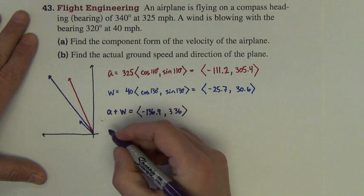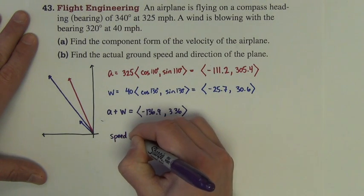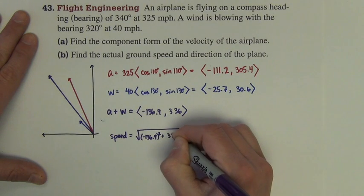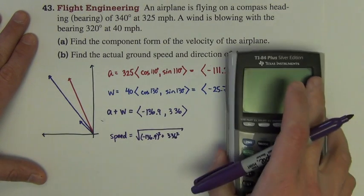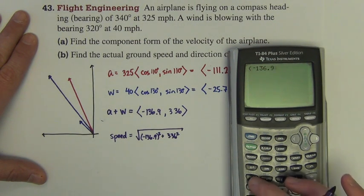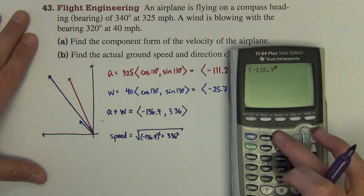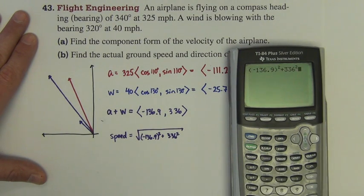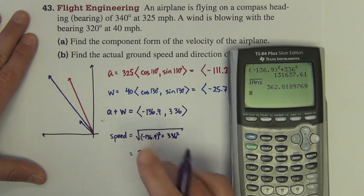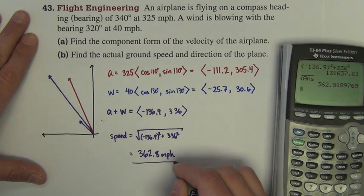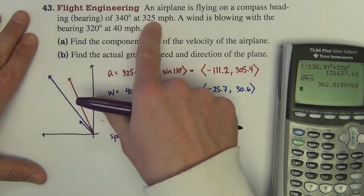The speed of this vector, the ground speed, is simply its magnitude. So I want the negative 136.9 squared plus 336 squared under a square root. It's just my Pythagorean's Theorem computation. So that would be, the speed is 362.8 miles per hour. And so the wind has definitely sped that up a little bit. It's like a tailwind, so it's pushing it.